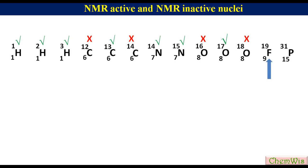Fluorine-19 with odd Z and odd A will be NMR active. Similarly, phosphorus-31 with odd Z and odd A will be NMR active.